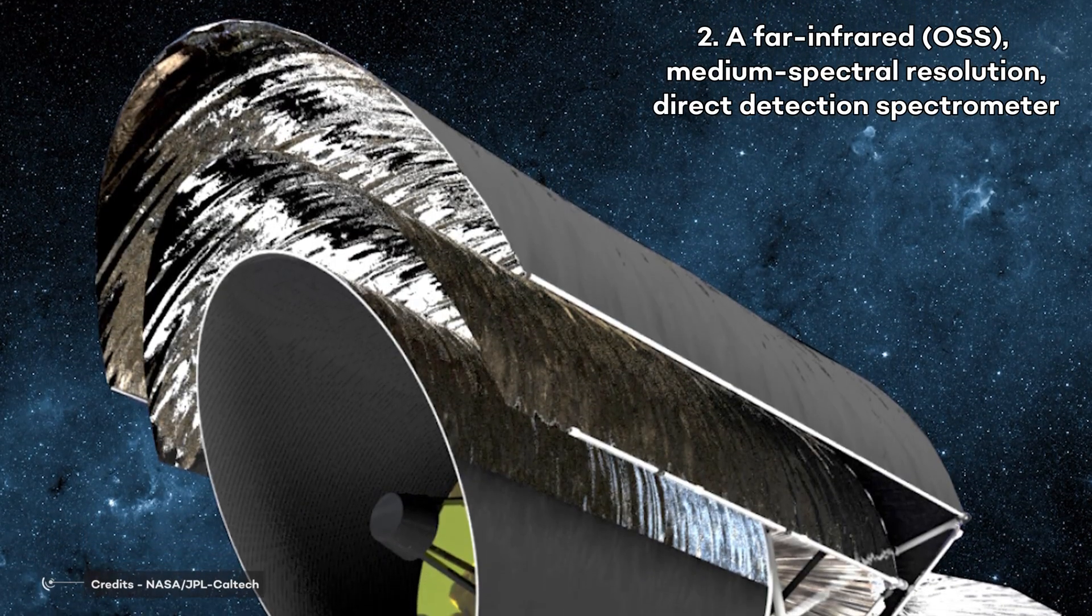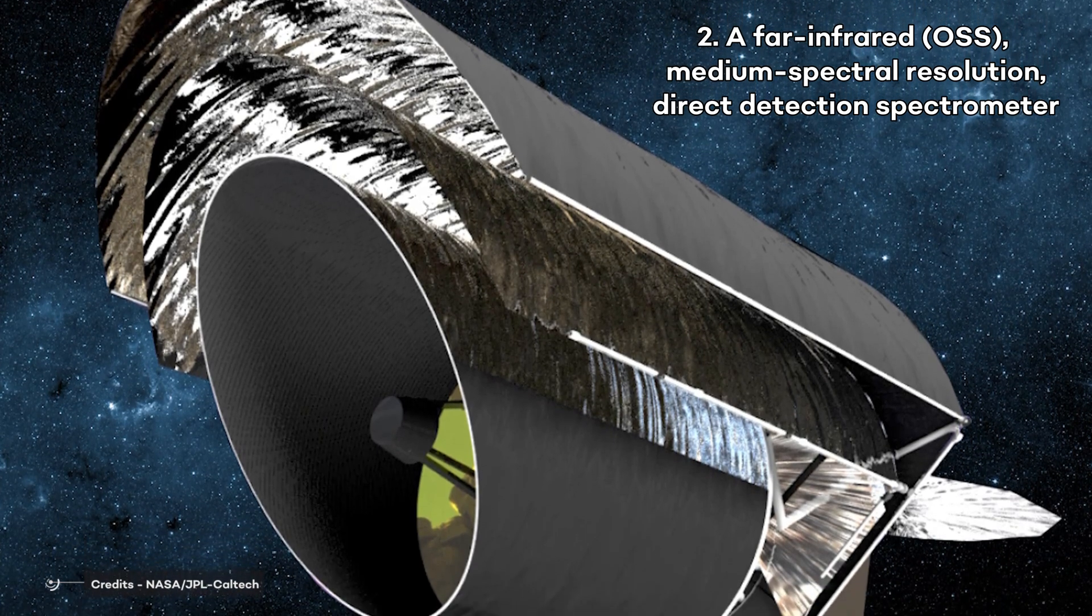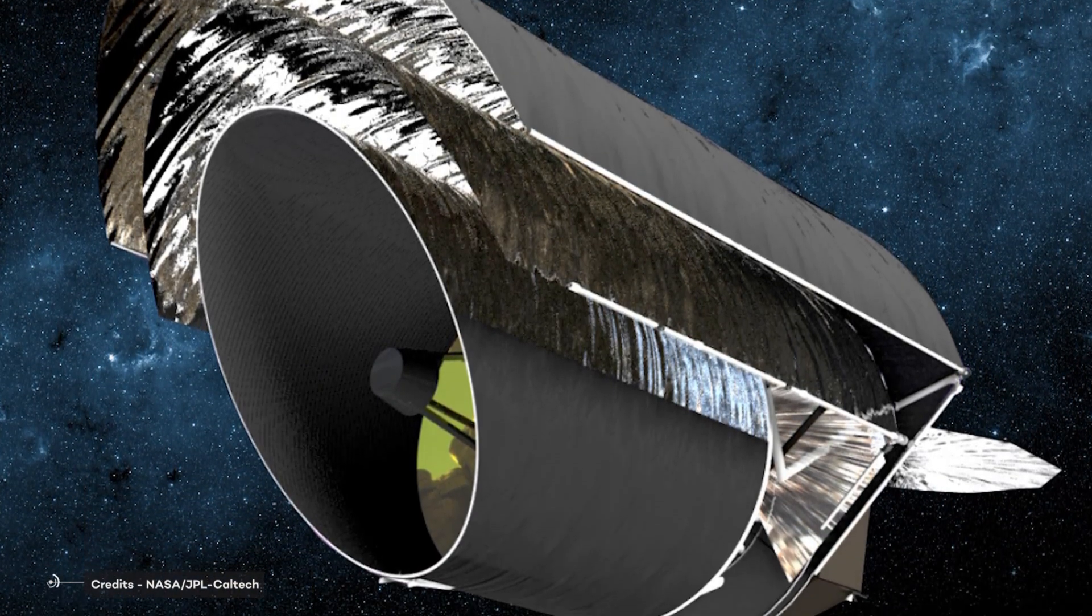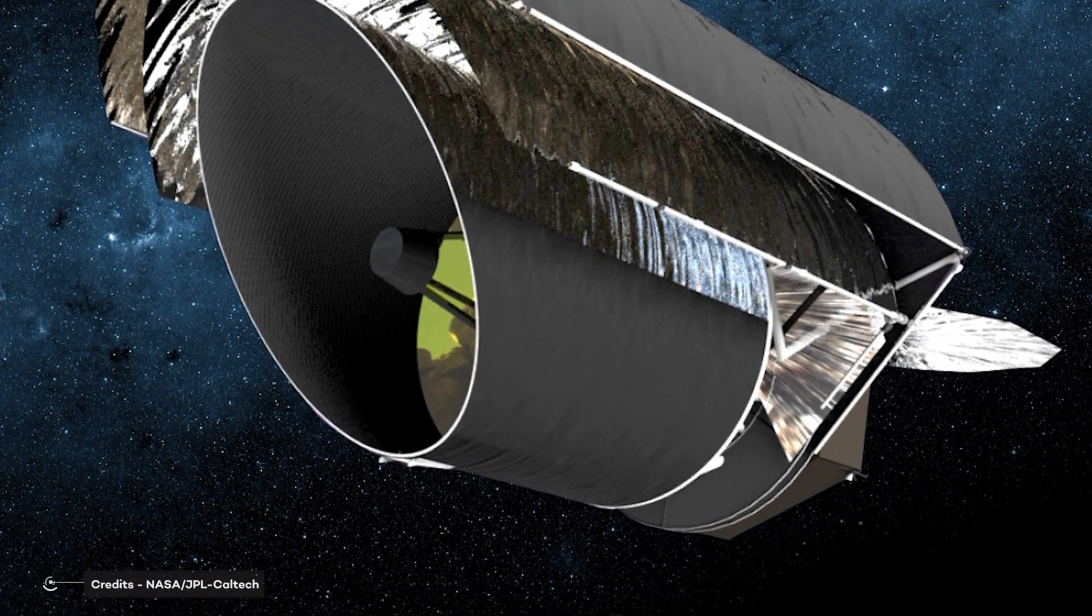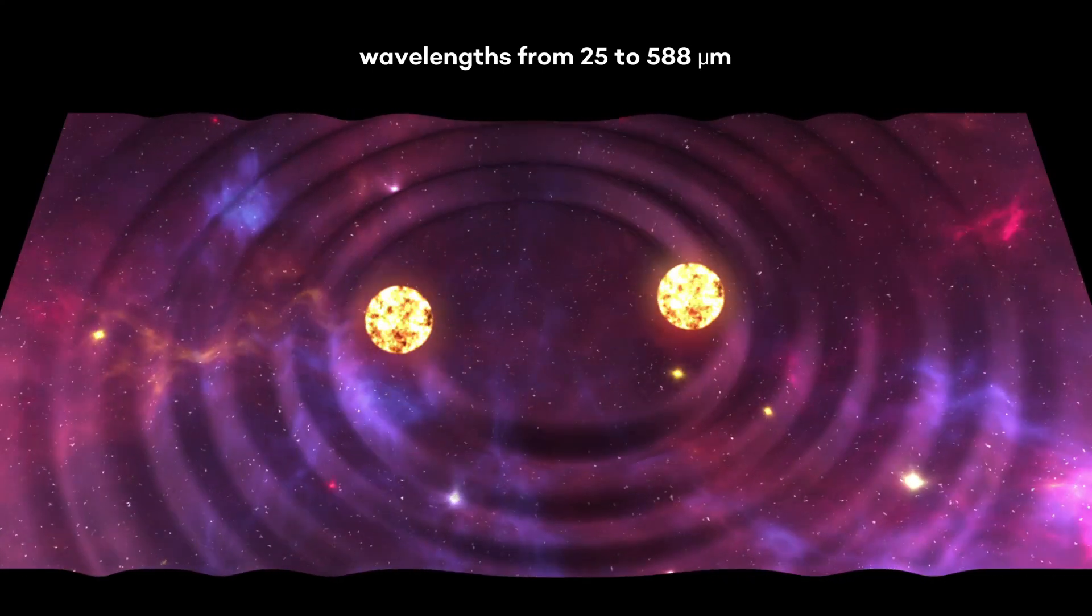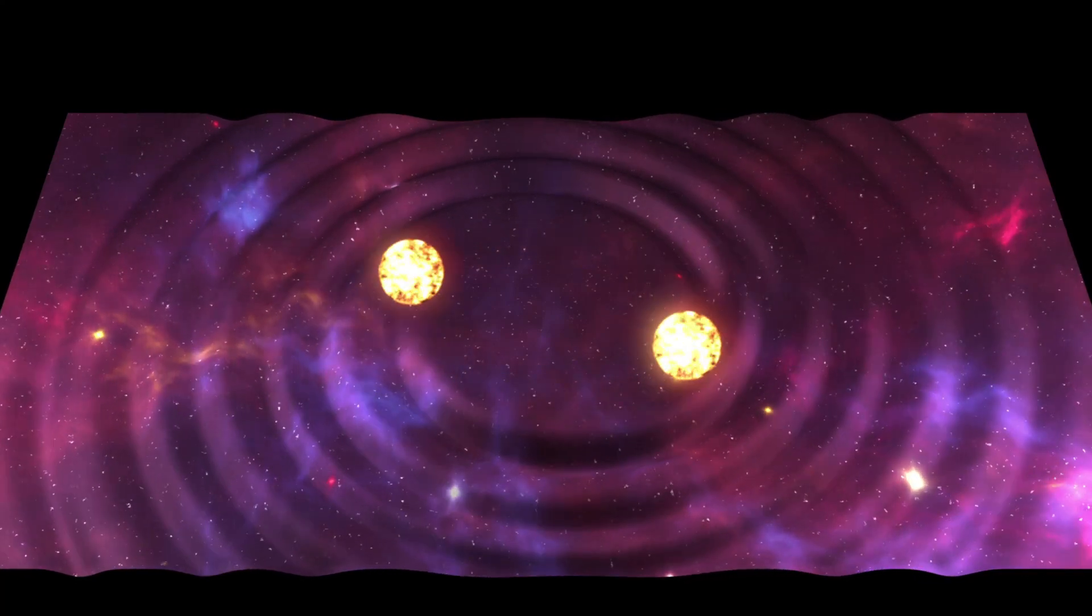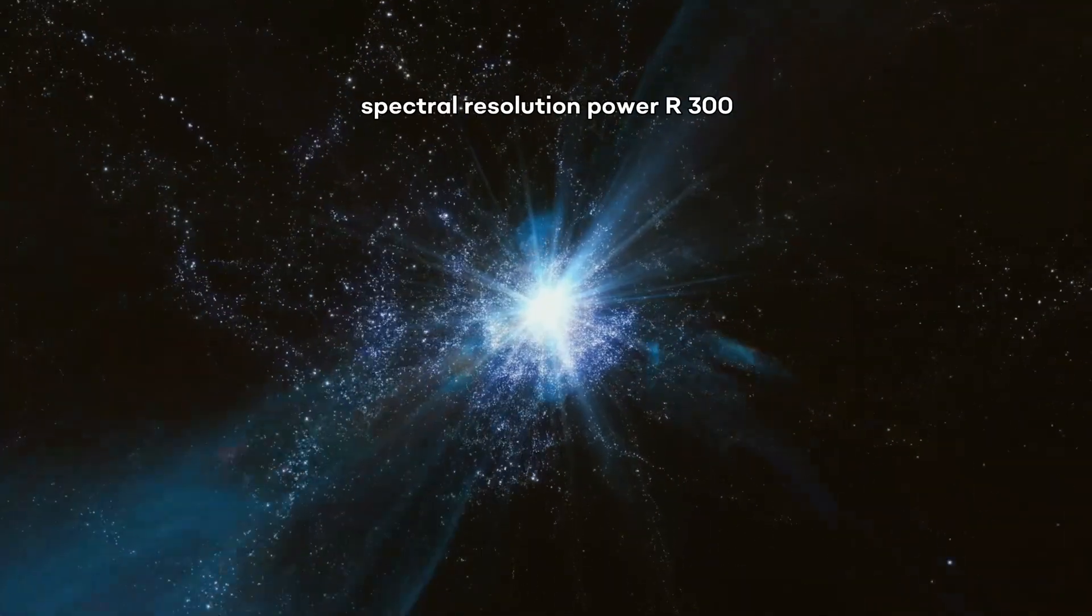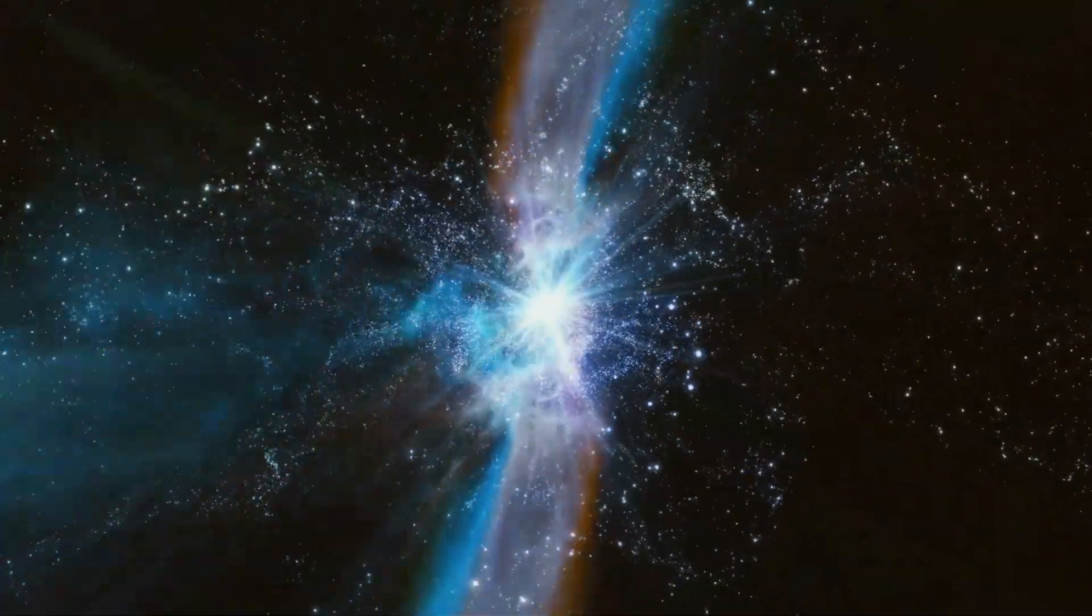A far-infrared OSS medium spectral resolution direct detection spectrometer optimized for multi-object spectroscopy and large area mapping spanning 30 to 600 microns. It will cover wavelengths from 25 to 588 micrometers, conduct deep and wide area spectroscopic surveys with spectral resolution power R300, which will help it observe the deep universe.